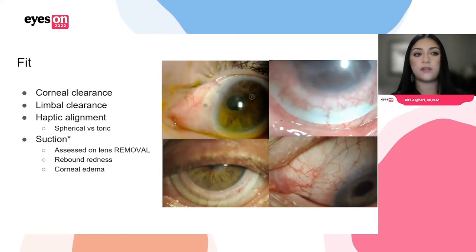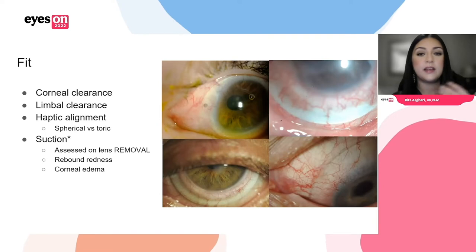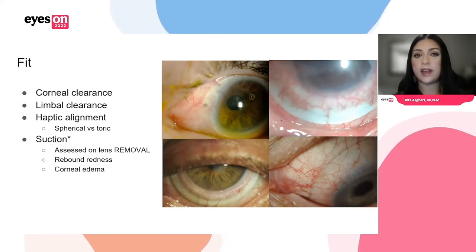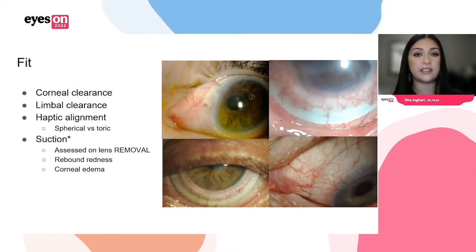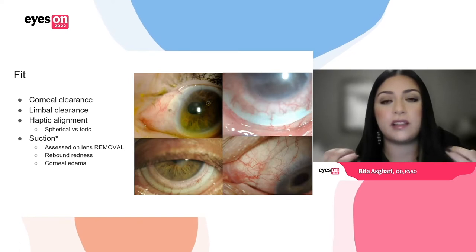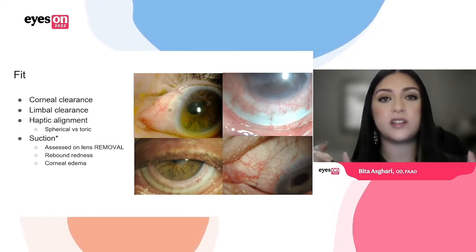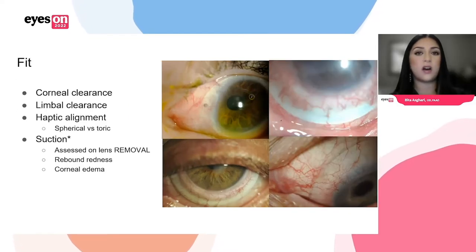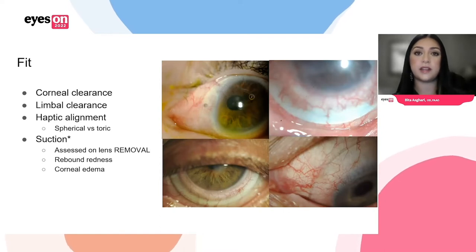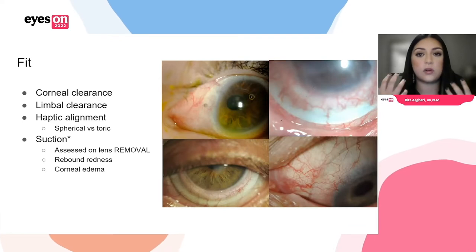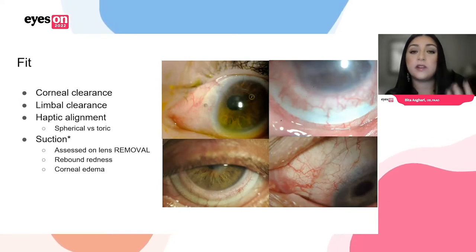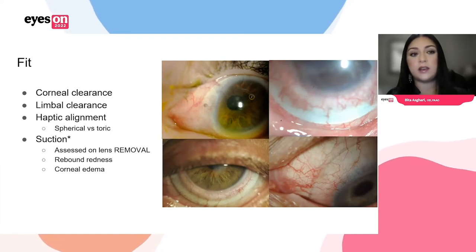The fit issue is pretty straightforward. You have to make sure you have corneal and limbal clearance, adequate haptic alignment, and consider whether you should be in a toric design over a spherical fit. One variable not talked about as much — but one I focus on significantly in clinic — is suction. When it comes to corneal clearance, limbal clearance, and haptic alignment, you appreciate all of that while the lens is on the eye. Suction is something you can really only appreciate once the lens is off the eye. Once the lens comes off, you look for things like rebound redness, corneal edema, and specifically limbal microcystic edema. This is a sign that there is potentially suction with this lens. Patients may also describe an achy, sore eye. This is suction — potentially it could be impingement as well. If you do assess this, you should be loosening the fit.